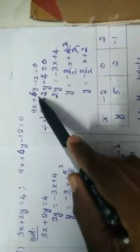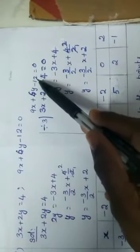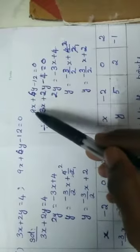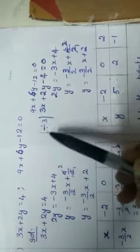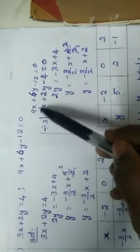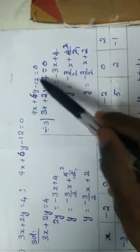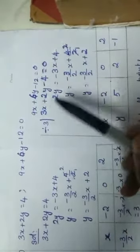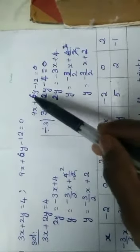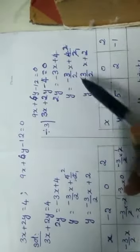Now we will see the calculation for second equation. What is our second equation? 9x plus 6y minus 12 equal to 0. Here, if you see this equation, you can understand these terms, all the 3 terms will be divisible by 3. So divide throughout by 3. This becomes 3x plus 2y minus 4 equal to 0.